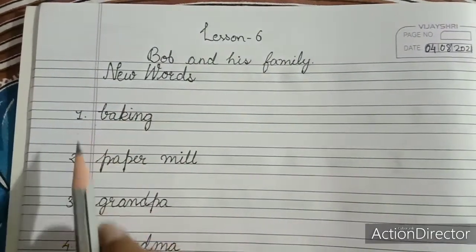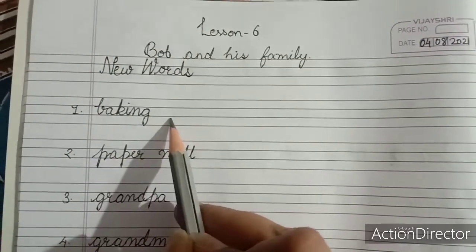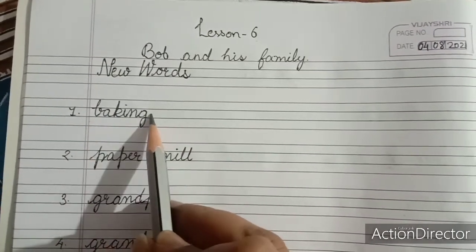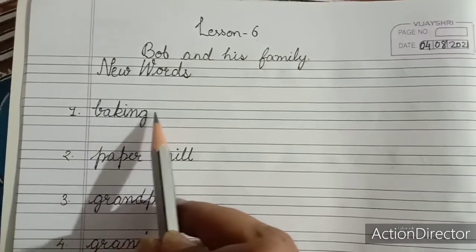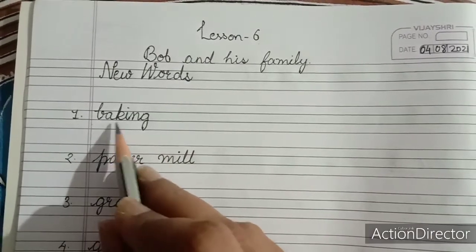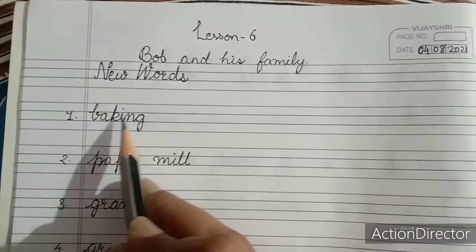So the first topic is new words and then 1, 2, 3 like this sequence you have to put and start writing the difficult words. So the first word for the lesson is baking. B-A-K-I-N-G. Baking means pakana. So the mother was baking a cake.